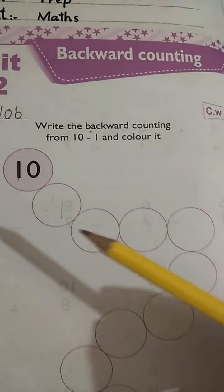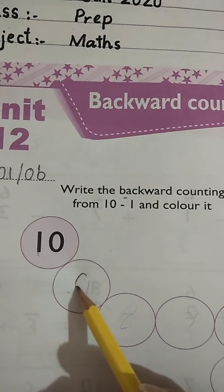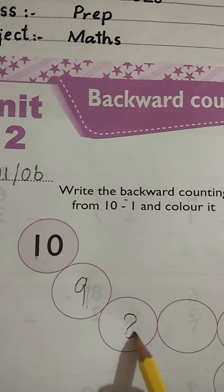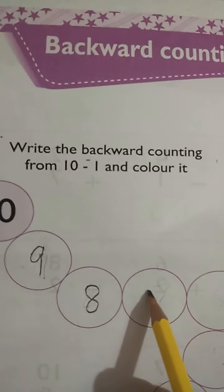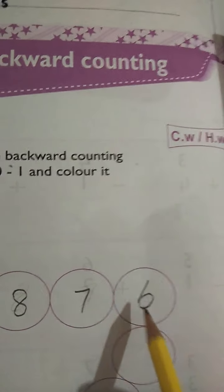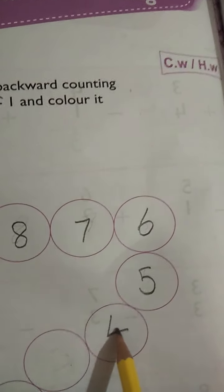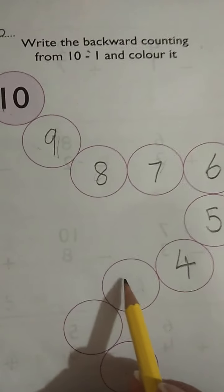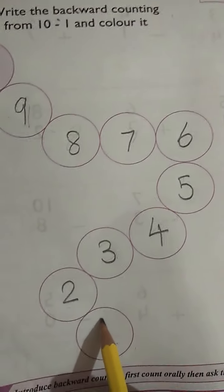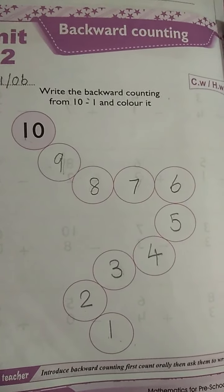from the back side, like 10, then 9, then 8, then 7, 6, 5, 4, 3, 2, and 1. So this is called backward counting.